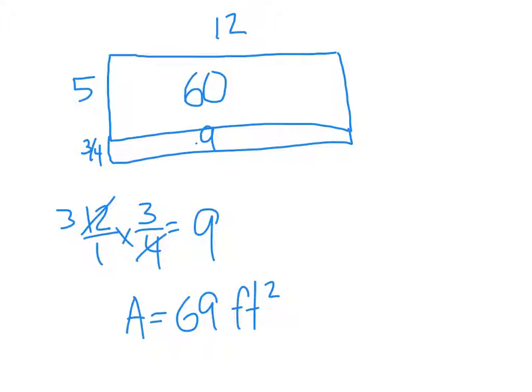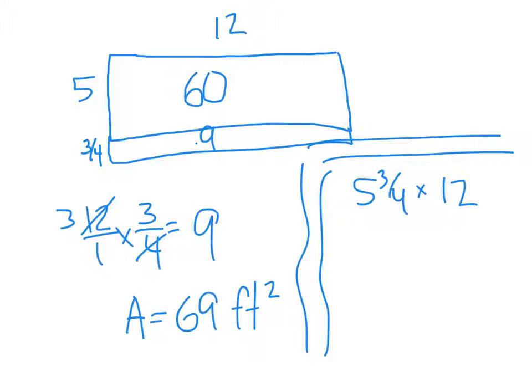I also could do 12 without the area model. I could do 5 and 3 fourths times 12. That's going to be 23 fourths times 12. And I can cross reduce. And that's going to also give me 69 feet squared. So there you go. That's how that's done. And that's all for today.